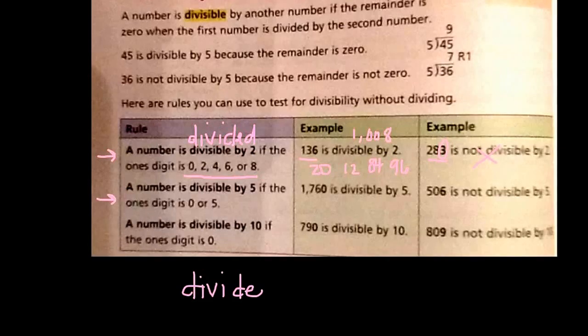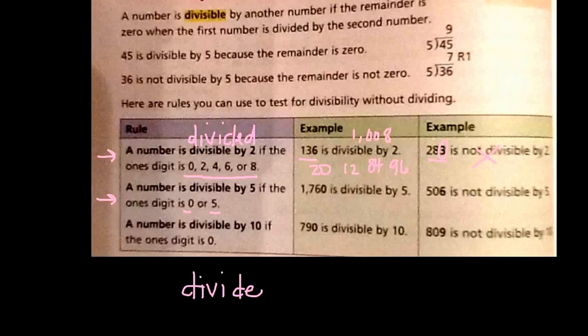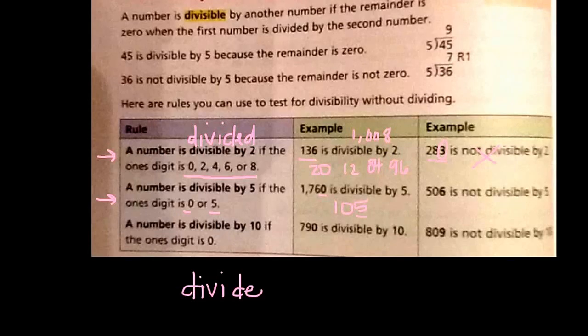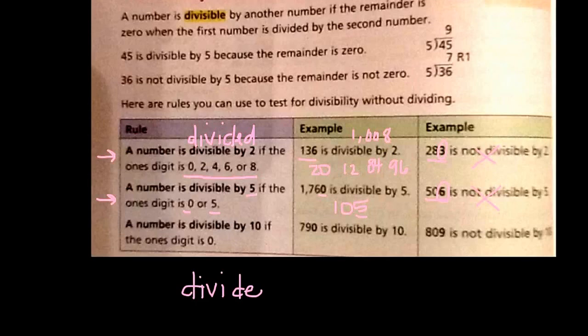Next rule is divisibility by 5, so again, can be divided by 5. The number has to end in a 0 or a 5. So, here's one example, 1,760 is divisible by 5, because it ends in that 0. Another example would be 105, because it ends in a 5. So, as a non-example, 506 would not be divisible, because it ends in a 6. Remember, it has to end in a 0 or 5 to be divisible by 5.